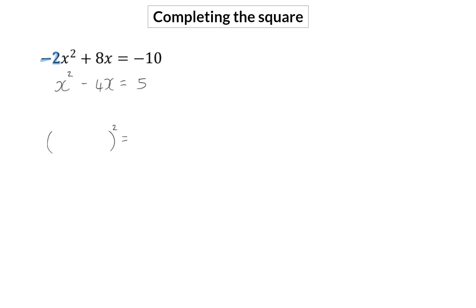The specific constant that you have to add is x's coefficient, or the b value, that you divide by 2 or half and then square.